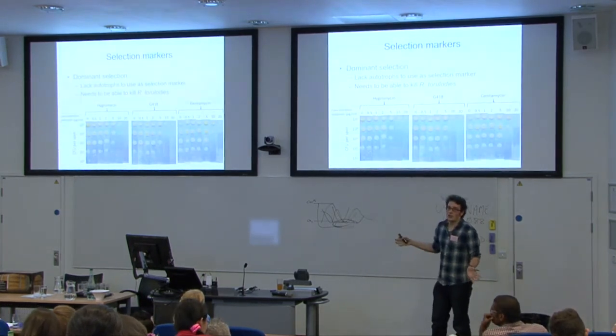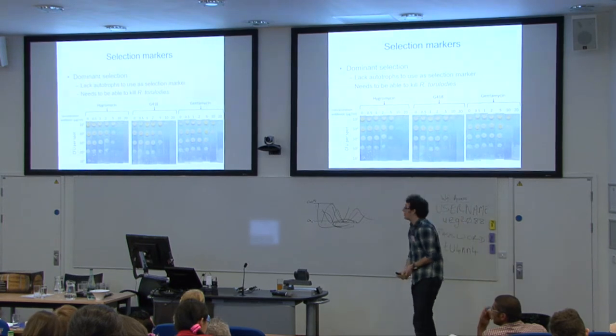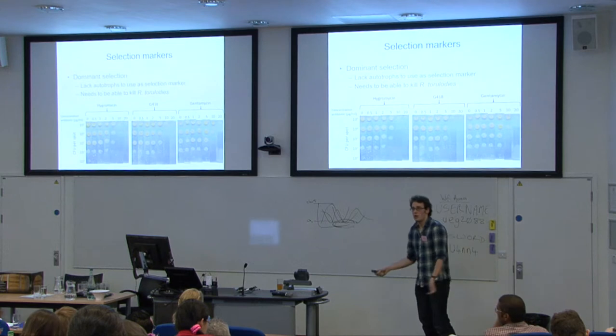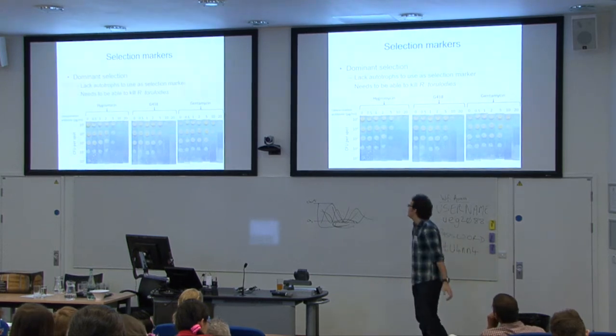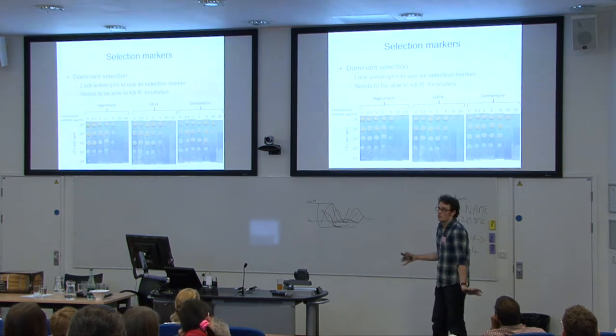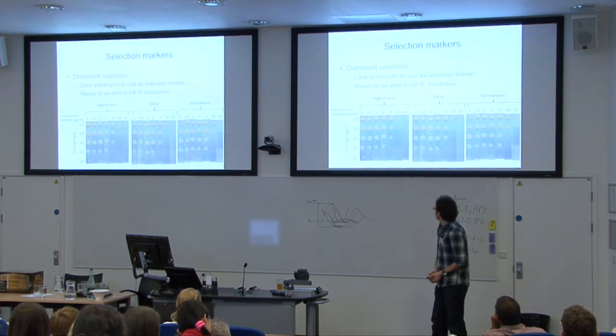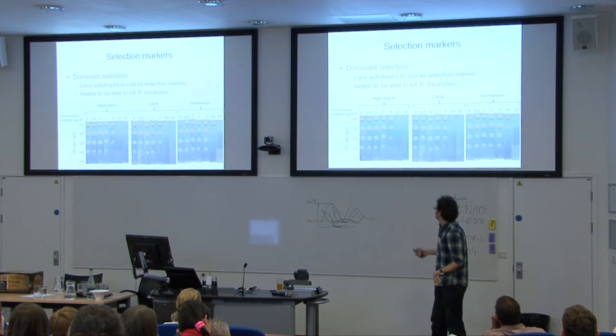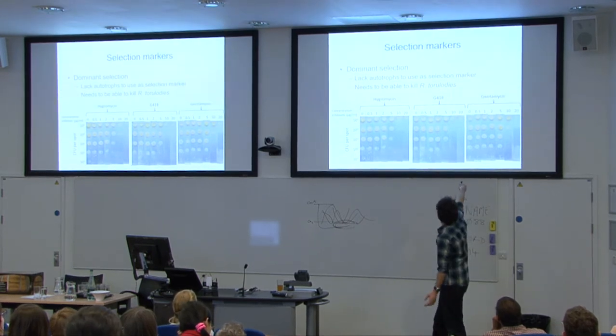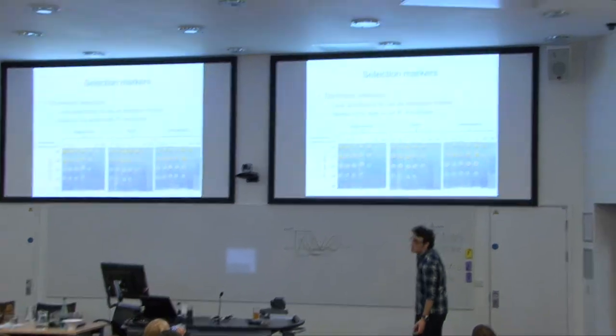In order for transformation to work, we need a system for selecting for transformants. We don't have auxotrophic markers, so we've gone with dominant selection. As the Chinese paper that originally demonstrated Agrobacterium-mediated transformation showed, we use hygromycin, but we've also tried G418 and gentamicin.